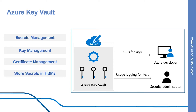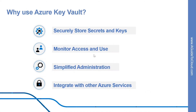The secrets and keys can be protected either by software or FIPS 140-2 Level 2 validated HSMs. You might wonder why you should use Azure Key Vault — mainly it is to centralize application secrets. Your application can securely access the information it needs by using URIs that allow it to retrieve specific versions of a secret, after the application key or secret is stored in Azure Key Vault, without having to write custom code to protect any of the secret information.